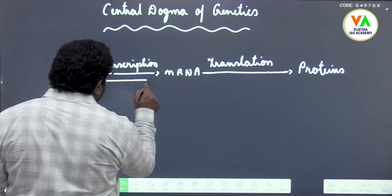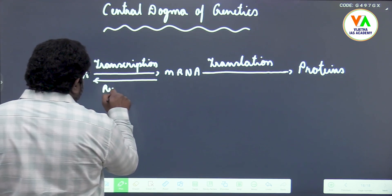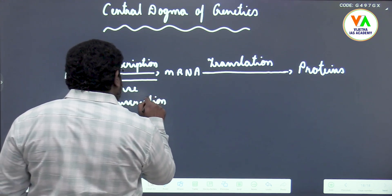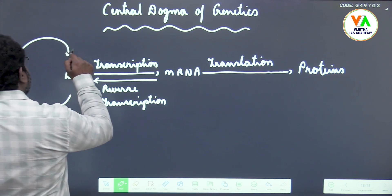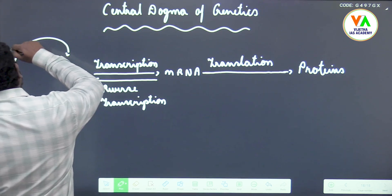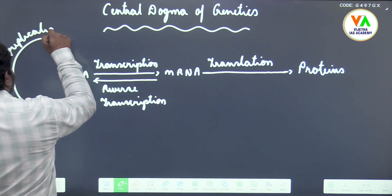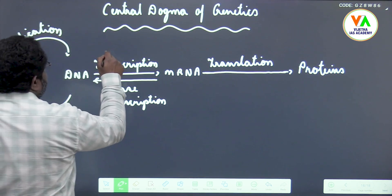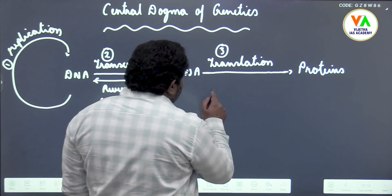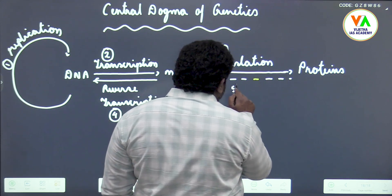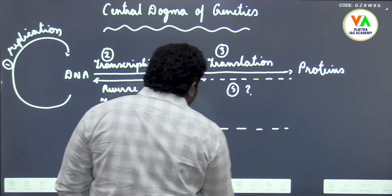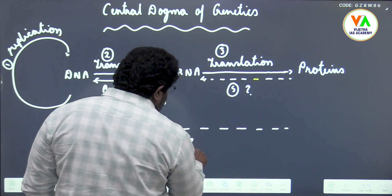From mRNA, DNA is synthesized, which is known as reverse transcription. The ability of DNA to form a complementary strand when the two strands are separated is known as replication. It is not established from proteins to DNA.